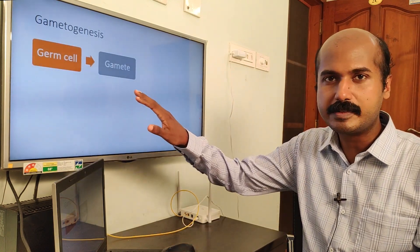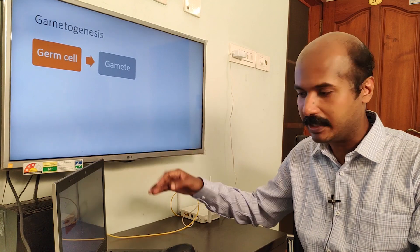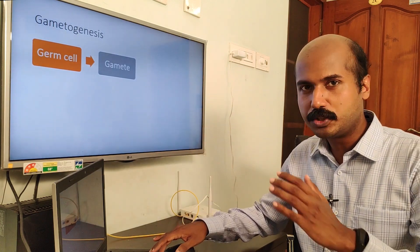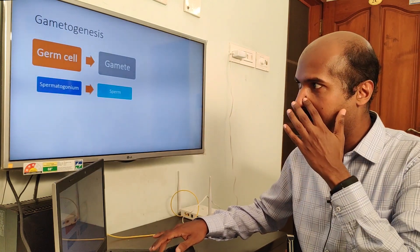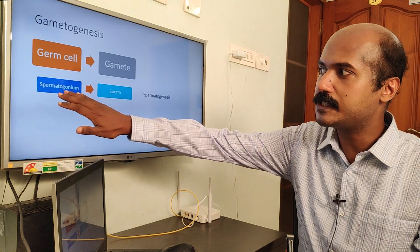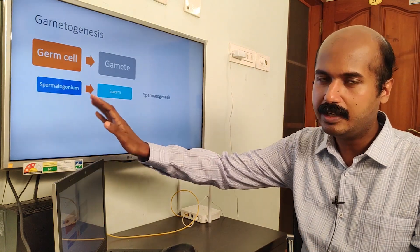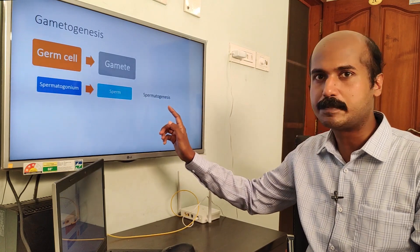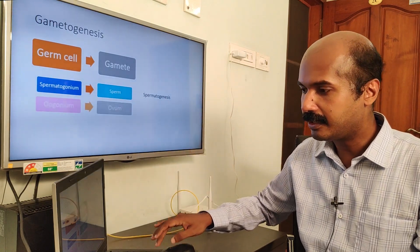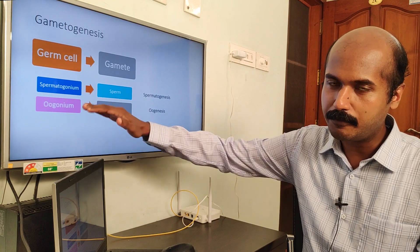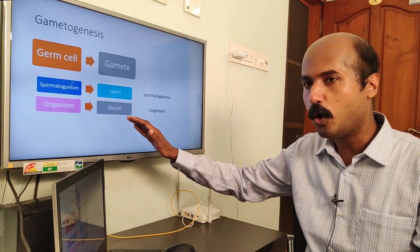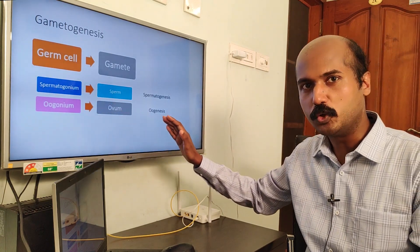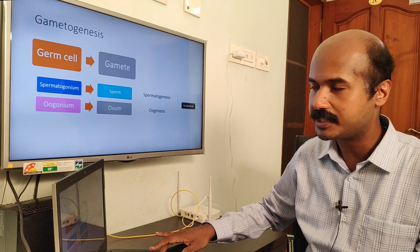Gametogenesis is the conversion of a germ cell into functioning gametes. In the male parent, the conversion of spermatogonium (the parent germ cell) into functioning sperms is called spermatogenesis, and the conversion of oogonium (the female counterpart) into ovum is called oogenesis. This is a general definition in animals.